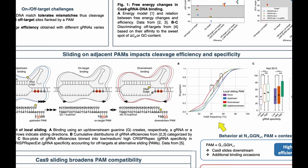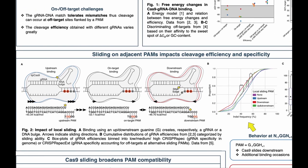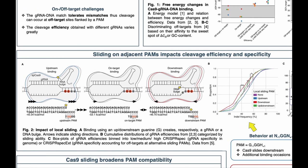It has been shown that Cas9 can find its targets not only by random search on the DNA, but also by lateral diffusion. Because of this, we were interested in seeing how Cas9 and the guide RNAs behave when multiple possible PAM sites are adjacent to each other and adjacent to an on-target site.